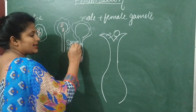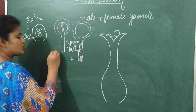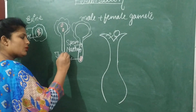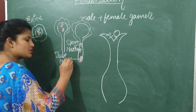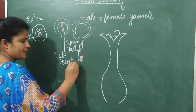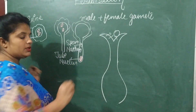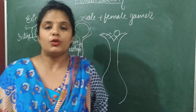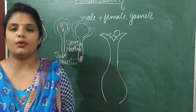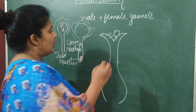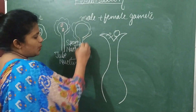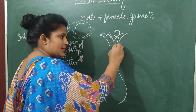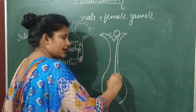These sperm nuclei act as male gametes. The tube nucleus is now at the tip. The role of the tube nucleus is almost over, because the basic role of the tube nucleus is to prepare the pollen tube. Once the pollen tube is developed, it passes through the style.